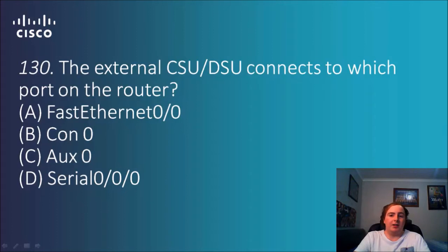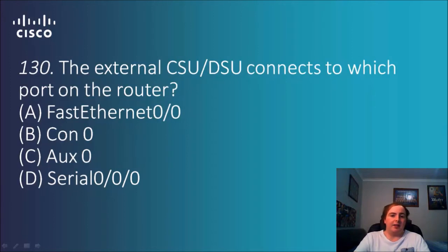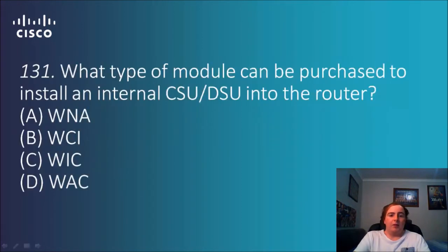Question 130: The external CSU/DSU connects to which port on the router? Options: fast Ethernet 0/0, con 0, aux, serial 0/0/0. The AUX is for the modem between the modem and router; the console port is generally between the end device and the router/switch; fast Ethernet is another port on the device. So the answer is the serial link, which allows those two devices to connect to each other through a LAN/WAN setup.